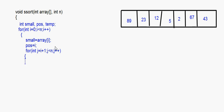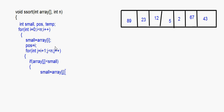After setting small and pos, we put an inner for loop: for int j equal to i plus 1, j less than n, j plus plus. In this inner for loop we do the comparison: if array[j] is less than small, then small becomes equal to array[j] and pos becomes equal to j.